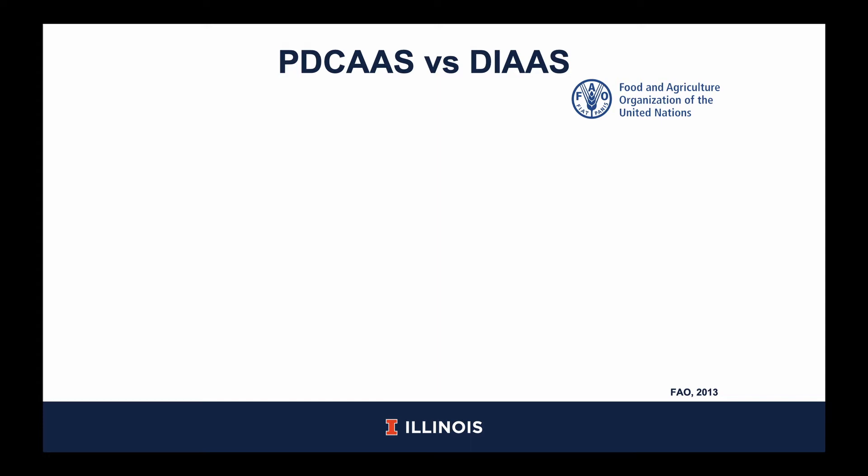The main differences between these two methodologies are as follows. The PDCAS methodology uses rat fecal digestibility, whereas DIAAS uses pig ileal digestibility values. This is important because we know amino acids are completely absorbed by the end of the small intestine. In addition, when analyzing protein in the feces, the value will be overestimated due to the effect of microbial protein. Also, the FAO has determined the pig as the most appropriate model when evaluating protein digestibility for humans.